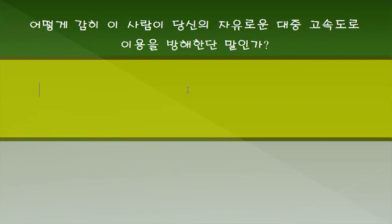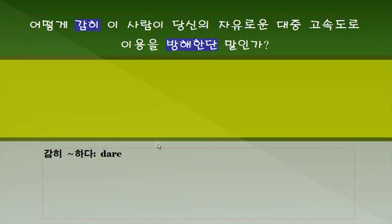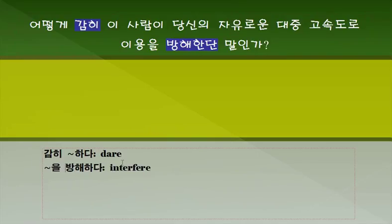두 번째 문장입니다. '어떻게 감히 이 사람이 당신의 자유로운 대중고속도로 이용을 방해한단 말인가?' '감히 ~~하다'에는 'dare'라고 하는 단어를 씁니다. 조동사로 쓰일 수 있습니다. '방해하다'라고 하는 표현은 'interfere', 이 단어를 씁니다. '~~을 방해하다' 할 때는 'with'라고 하는 전치사의 도움이 필요합니다. 그래서 '감히 ~~을 방해하다'라면 'dare interfere with', 이렇게 우리가 표현할 수 있습니다.